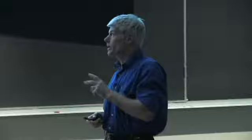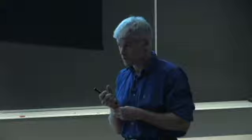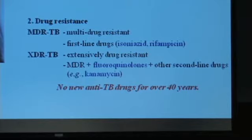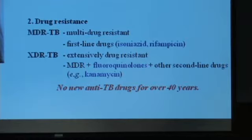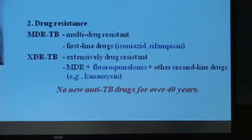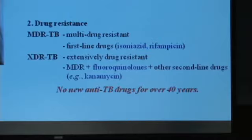The second major reason why TB continues to be such a force to be reckoned with is due to the emergence of drug resistance. MDR TB—multi-drug resistant TB—refers to strains resistant to both first-line drugs I mentioned: isoniazid and rifampicin. More alarmingly is the rise in XDR TB—extensively drug resistant strains. These are essentially MDR TB strains that have acquired resistance to fluoroquinolones and at least one other second-line drug such as kanamycin. Again, I remind you that no new anti-TB drugs have been developed for almost 50 years.